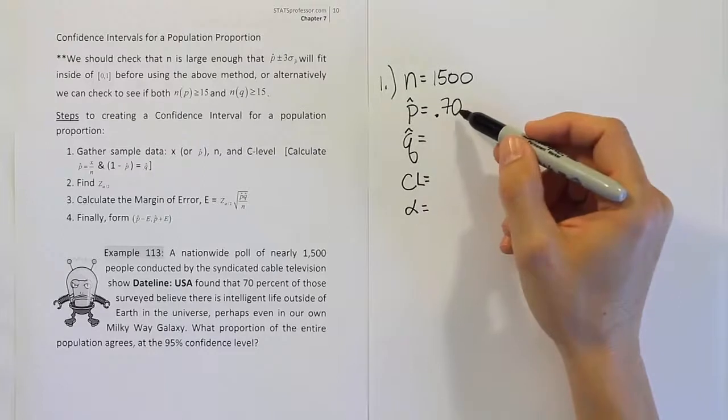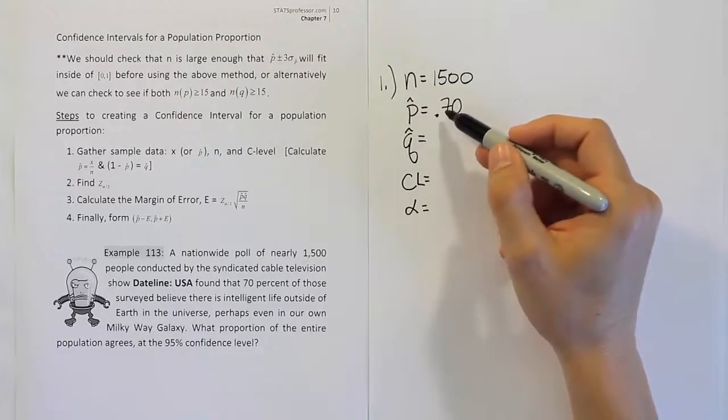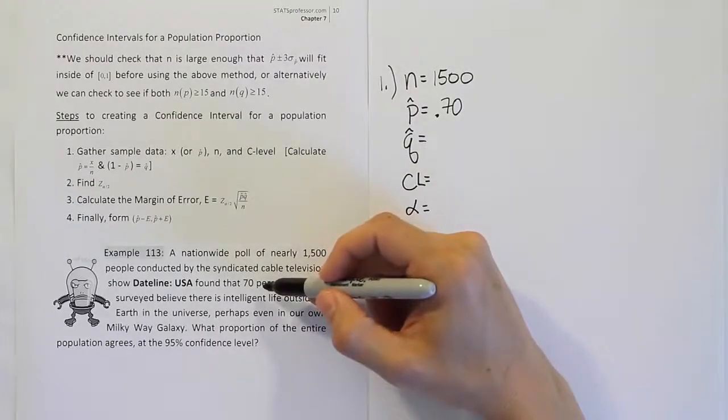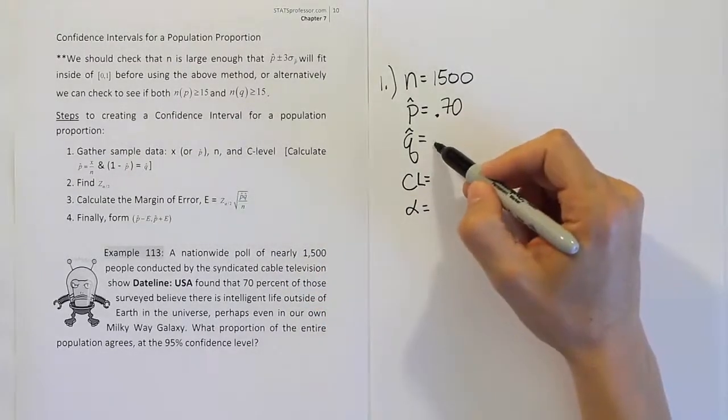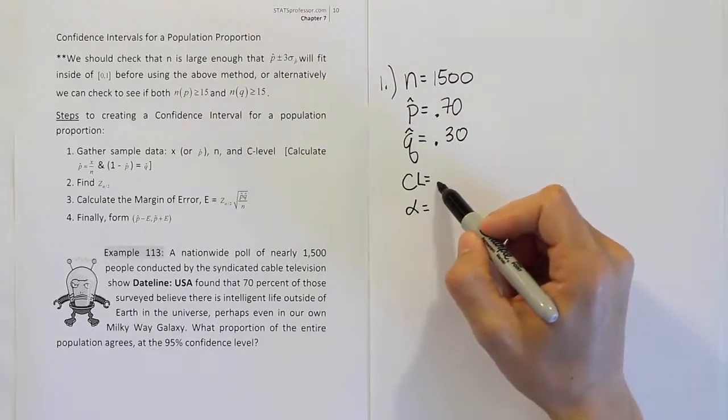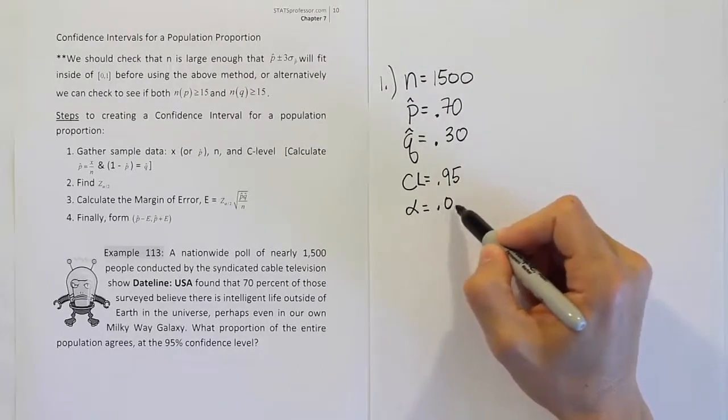The q-hat is going to be the complement of p-hat. So q-hat is what's left over from 100% when you subtract away p-hat. So 70% of these people believed in aliens, the remaining 30% must not believe. The confidence level is 0.95. The alpha, as a result, is 0.05.